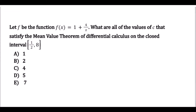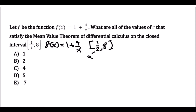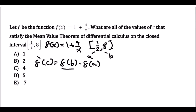Let f be the function f(x) = 1 + 4 over x. Find all values of c that satisfy the Mean Value Theorem on the closed interval [1/2, 8]. We write the function f(x) = 1 + 4 over x, where a = 1/2 and b = 8. The Mean Value Theorem equation is: f prime of c equals f(b) minus f(a) over b minus a.